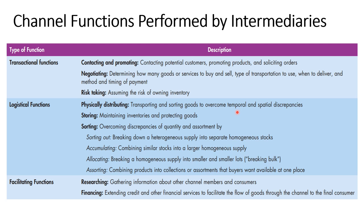Temporal discrepancy refers to the gap between when consumers need a product and when it's actually made, while spatial discrepancy refers to the space available at a particular seller's store. Logistical functions also include storing — maintaining inventory and protecting goods — and sorting, which overcomes discrepancies of quantity and assortment. Sorting involves breaking down heterogeneous supply into separate homogeneous stocks, accumulating by combining similar stocks into a larger supply, and allocating by breaking a homogeneous supply into smaller lots.